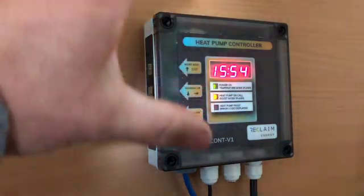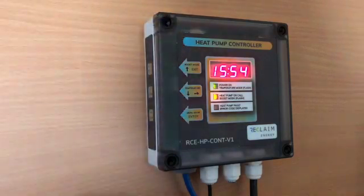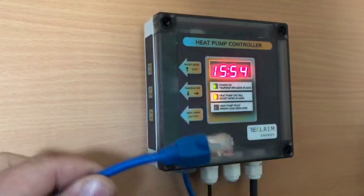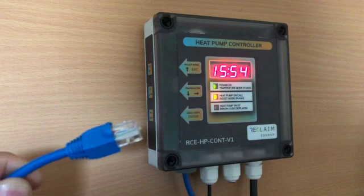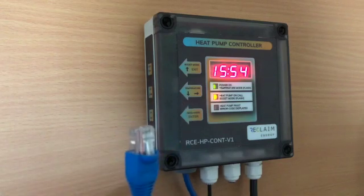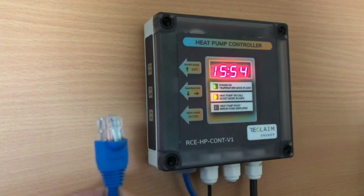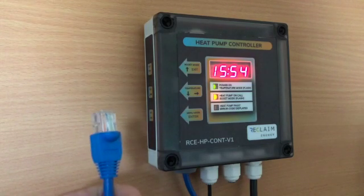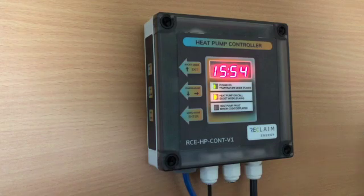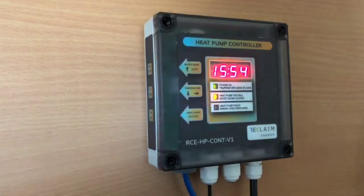So basically we have the controller itself, which is this box here. Now that's connected to the heat pump via an RJ45 connector. This connector here goes into the connection which is on the right hand side of the heat pump, where your power supply joins in and also just above where your flow and return pipe work connect.